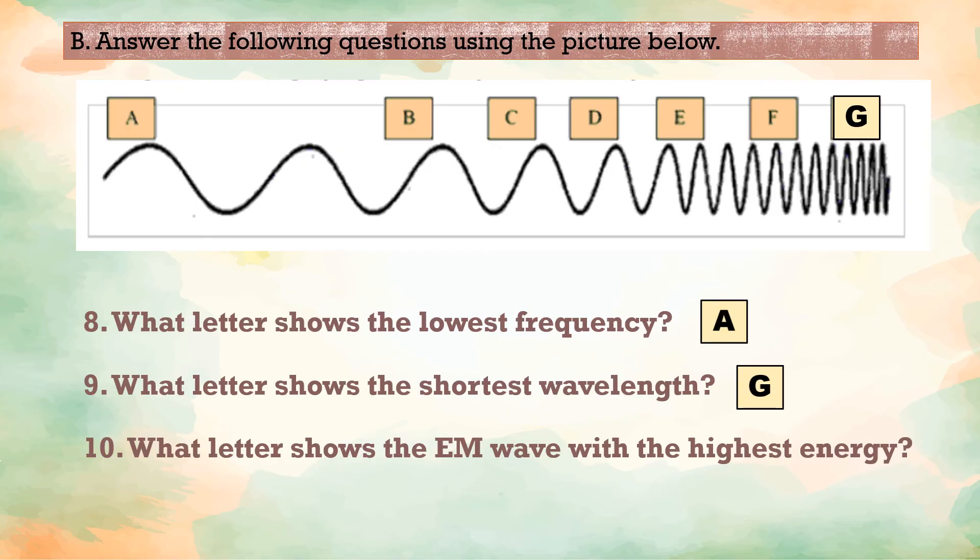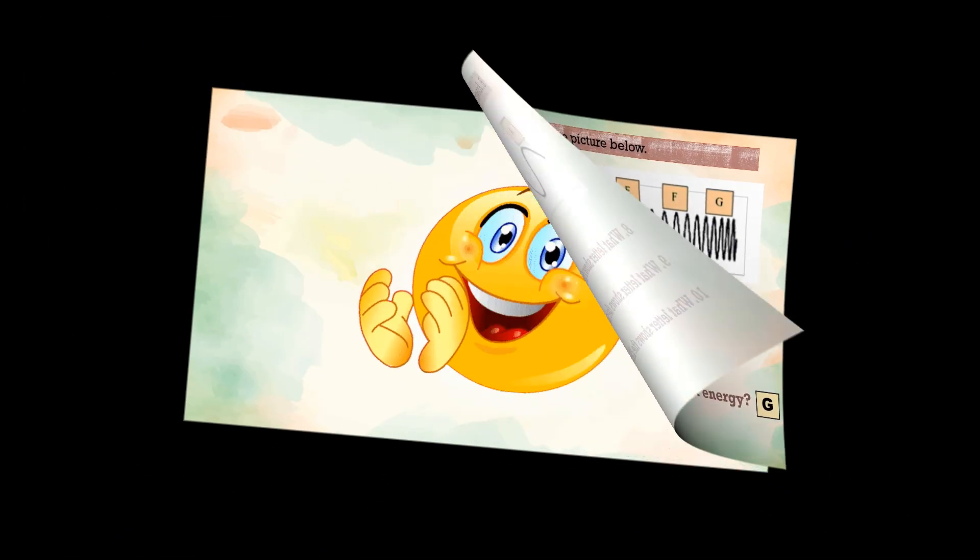And for number 10, what letter shows the electromagnetic wave with the highest energy? Well done learners! Letter G is the highest energy. Great job learners! That signifies that you understood the lesson well. Are you now ready to summarize?